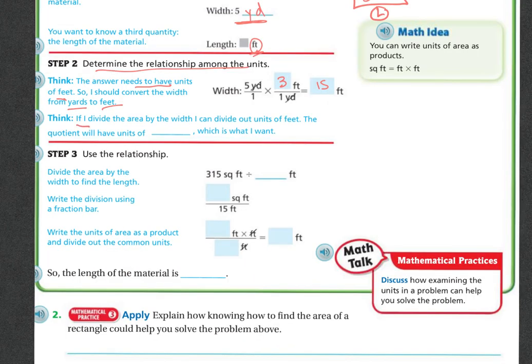So think, if I divide the area by width, I can divide out the units of feet. And the quotient will have units of feet, because we want it to be feet. Which is what I want. So now we're going to use that relationship.